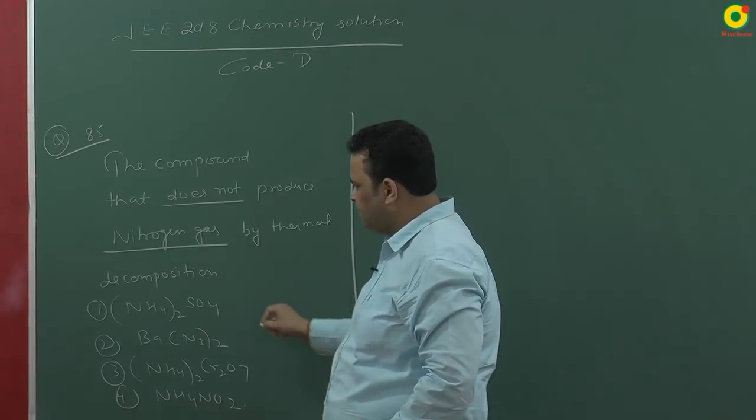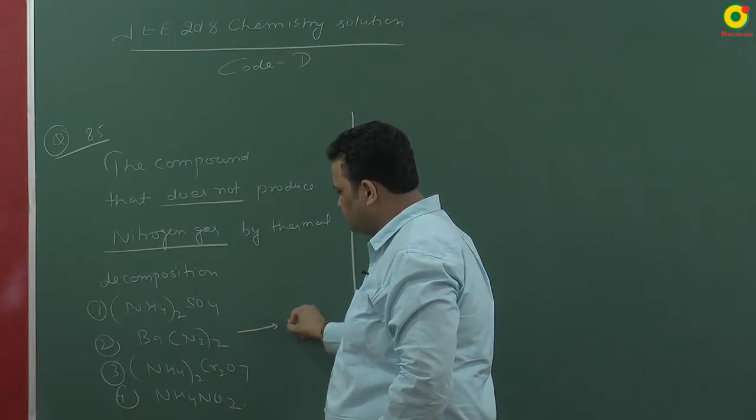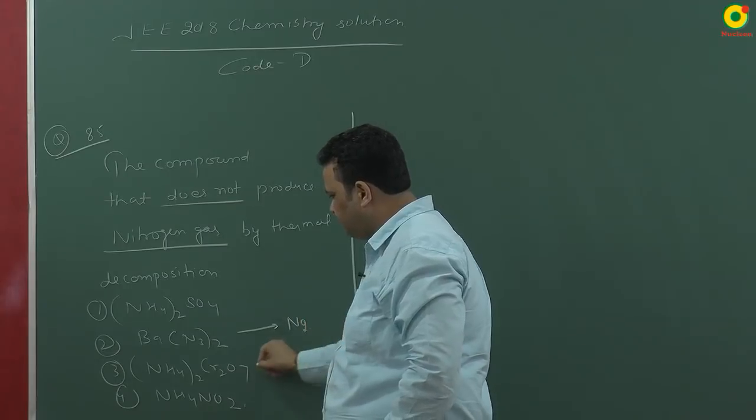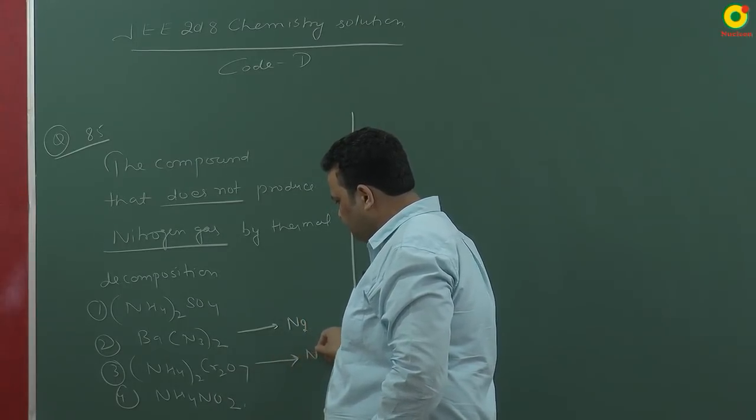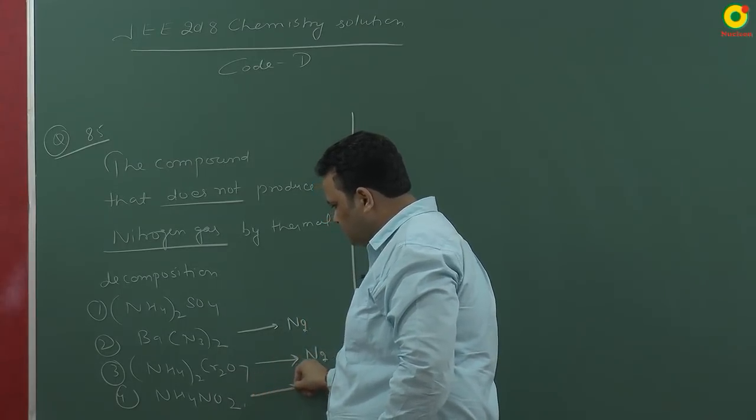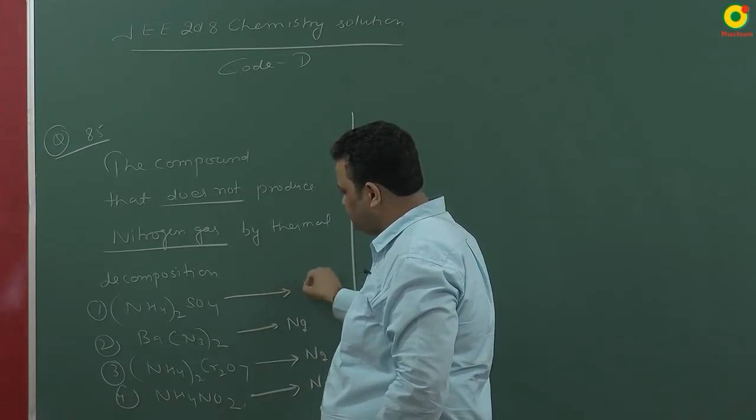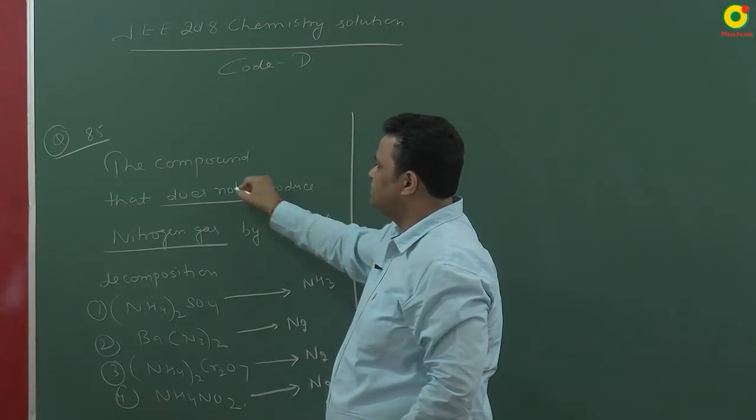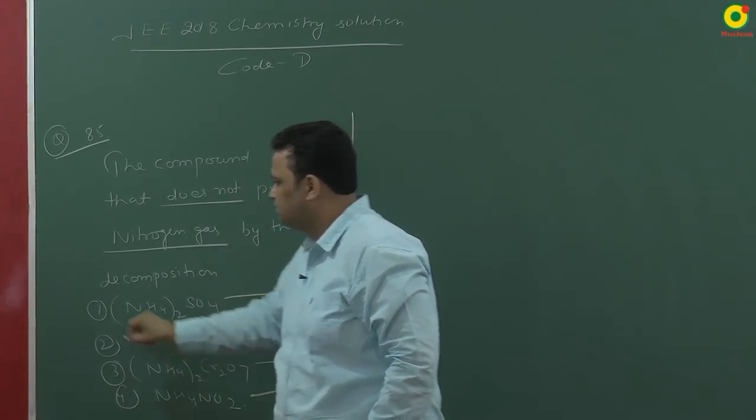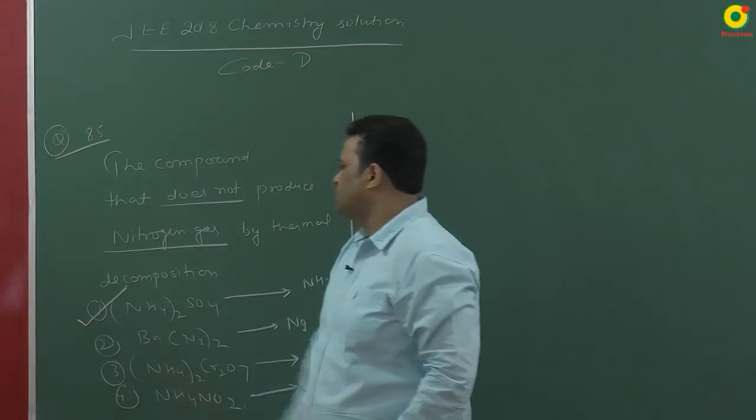When we are heating barium azide, it can produce nitrogen gas in a very pure form. It also produces nitrogen gas. Only this produces ammonia gas, so he is asking which does not produce nitrogen gas. The answer is ammonium sulphate.